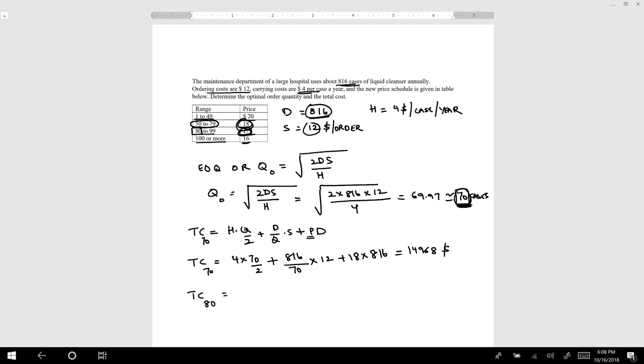I can calculate the total cost at 80 units. This is going to be H, which is 4, times now my order quantity Q is 80, divided by 2, plus D is again 816, divided by my new Q, which is 80, times S, which is 12, plus now I am getting a new price, which is $17, multiplied by the demand, 816. If I calculate this, my total cost here is $14,154. Obviously, the cost decreased here compared to when I order 70, so 80 is a good option for us because our cost is reducing.